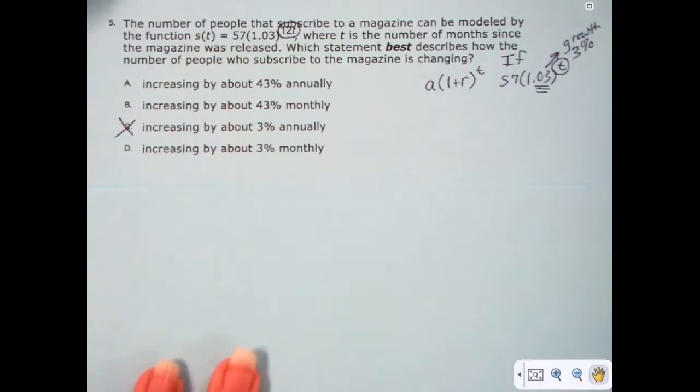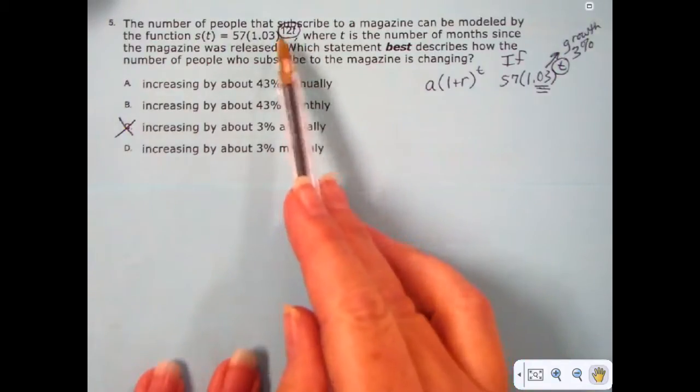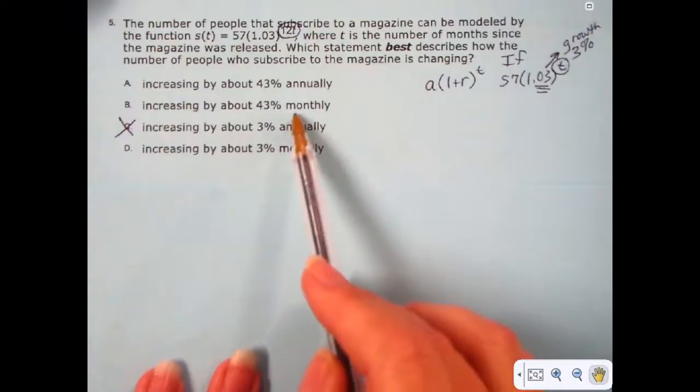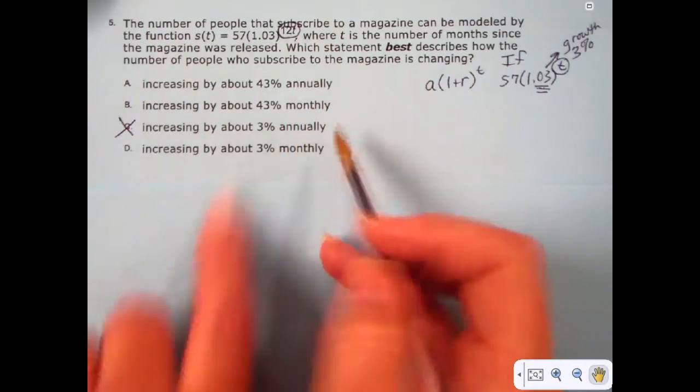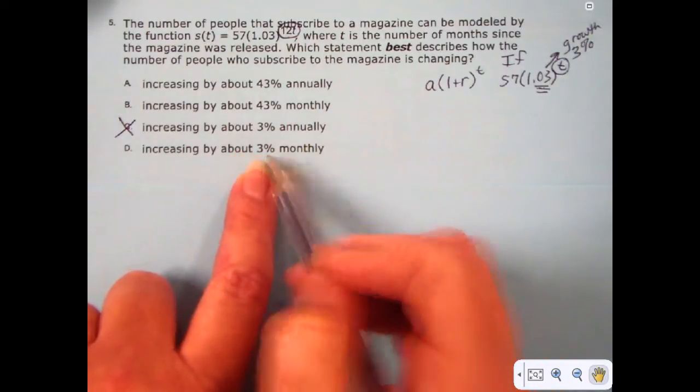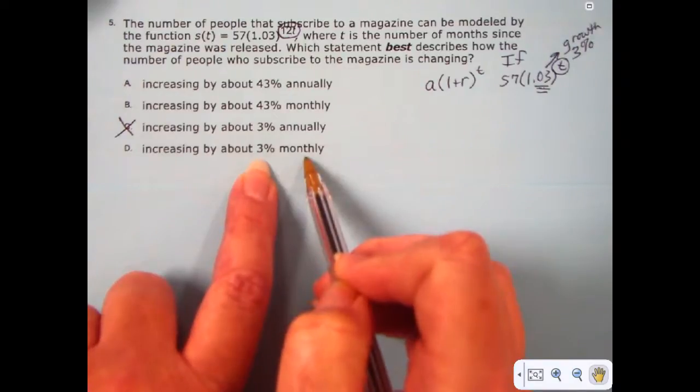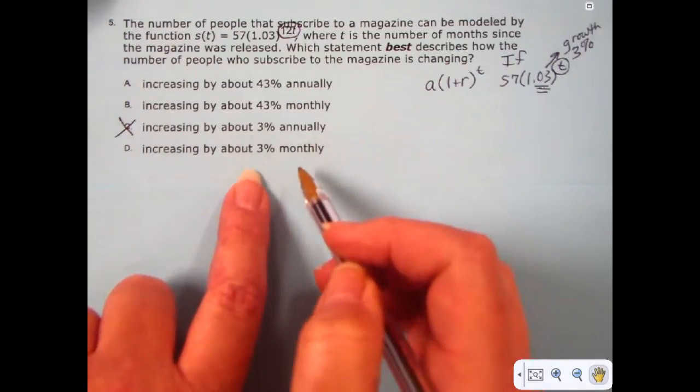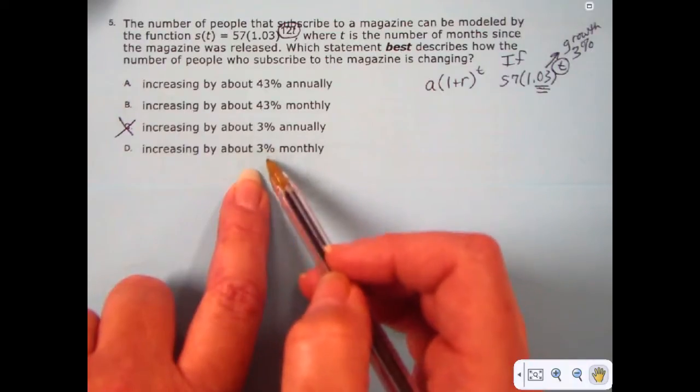Now you can do some deductive thinking, and you can eliminate something else. If we see 3% annually and 3% monthly, those both being 3% probably not true.